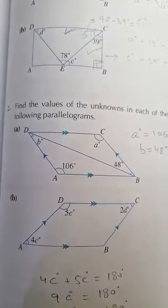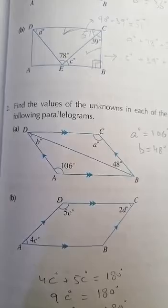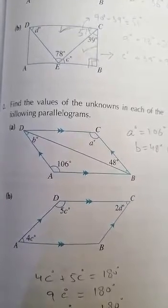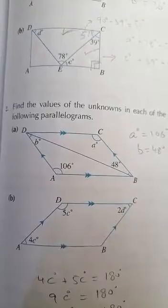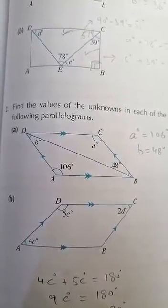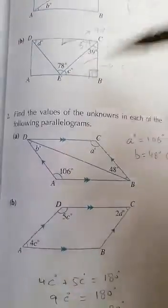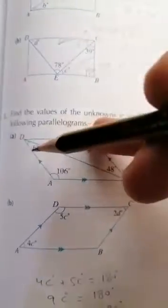Let's discuss question 2 of exercise 11b. Here we have been given a parallelogram in part a with a few angles, and we need to calculate angle a and angle B from this diagram by applying angle properties.